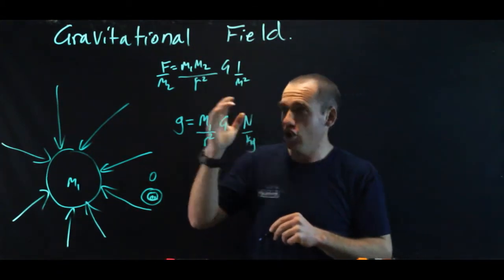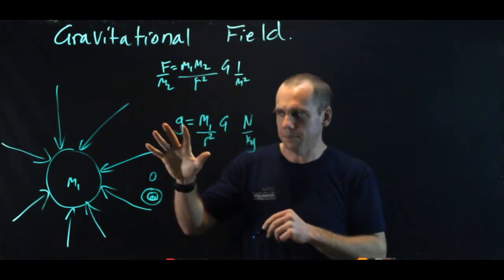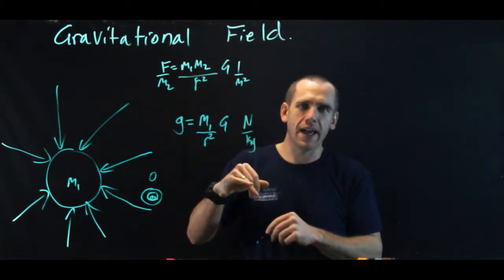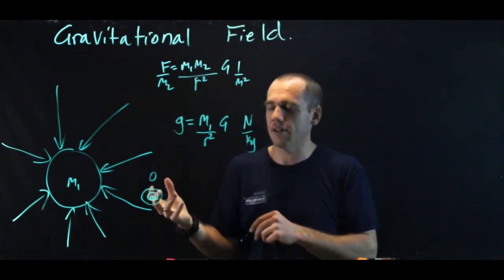Now, why is it called g? Well, if you think about it, g is actually an acceleration. A newton per kilogram is a force divided by a mass, and force divided by mass is an acceleration.